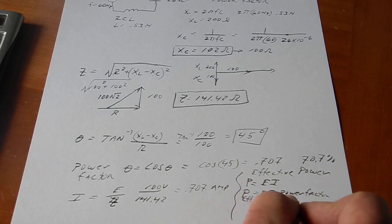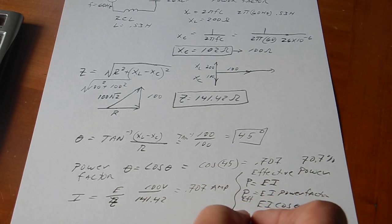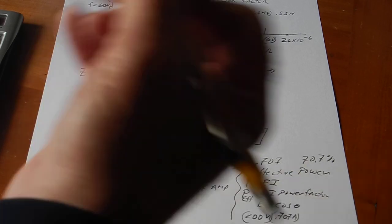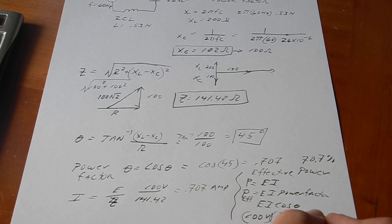So, it's E I cosine of theta, which is 45, which is 0.707. As we just said, so we have 100 volts times 0.707 amps. And the way I designed this 0.707 shows up too many times. So, I'm going to write this as the cosine of 45.